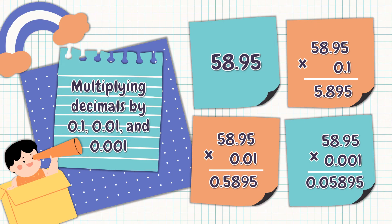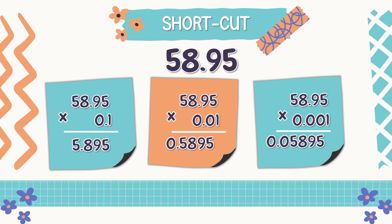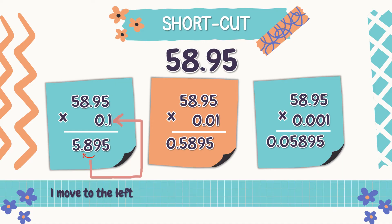Oh, but it's quite long, right? So let's look for a shortcut. Look at the products: in multiplying by one-tenth, we move the decimal point one place to the left.